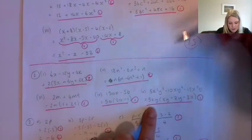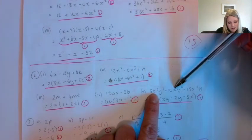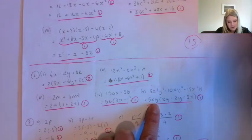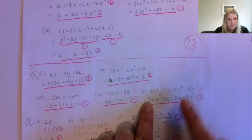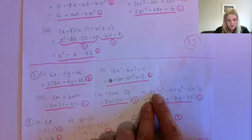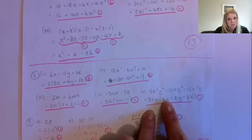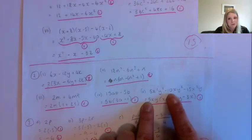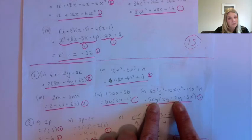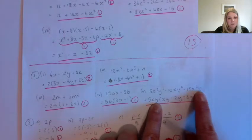This one is a little bit more tricky. The numbers 5, 10, and 15 are all divisible by 5. For the letters: there's an x squared and x terms so we can bring out x, and there are y squared and y terms so we can bring out y, giving a common factor of 5xy. To get from 5xy to the first term, x squared y squared, we multiply by xy. To get to minus 10xy squared we multiply by minus 2y. And for minus 15x squared y we multiply by minus 3x.